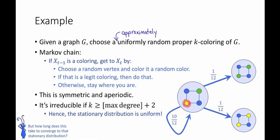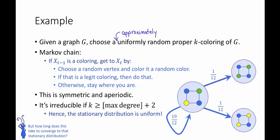If that turns out to be a legit coloring, we'll go to that coloring. In this example, that happens with probability 1/12, because there are four vertices to choose from and three colors, and 1/4 times 1/3 is 1/12. However, there's some possibility that we will not get a legit coloring. For example, if we recolor a vertex blue and that's not a valid coloring, we just stay in the current state.